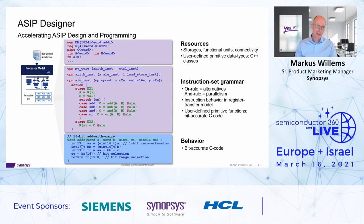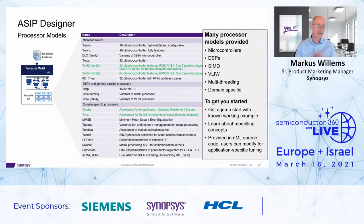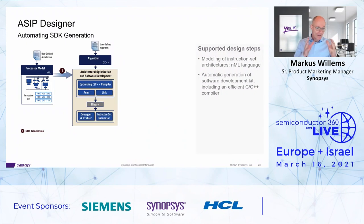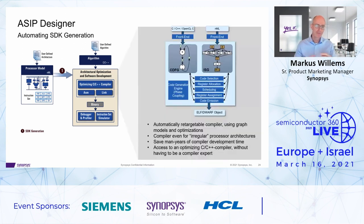No one has to start from scratch. We offer a wide range of example models written in this NML modeling language for various kinds of architectures, including the RISC-V ISA implementations which Patrick will cover in more detail. You see a wide range of example models, all provided in NML source code and available for you to modify and extend. Once you have this model, you click a button and you get a C compiler right away — even for your specialized architecture. It's a unique capability of our toolset that we retarget the compiler to your specific architecture.